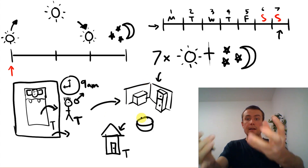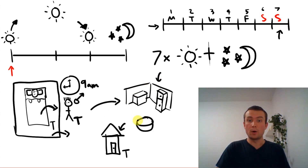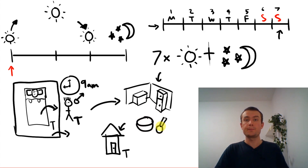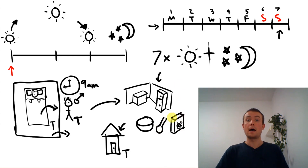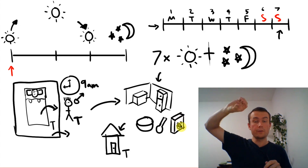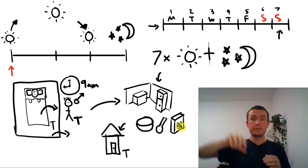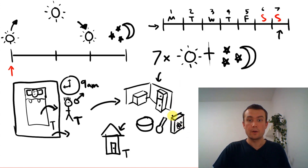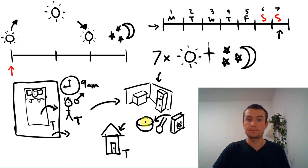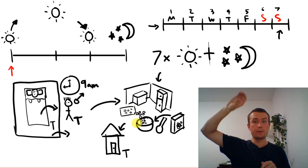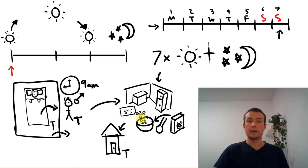Tim gets a bowl and a spoon. He gets cereal — a box of cereal. He pours the cereal from the box into the bowl.